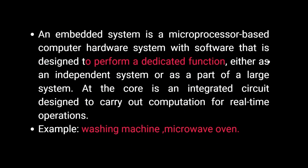An embedded system is a microprocessor-based computer hardware system with software designed to perform a dedicated function, either as an independent system or as part of a larger system. At the core is an integrated circuit designed to carry out computation for real-time operation. Basic real-time application examples are washing machines and microwave ovens.